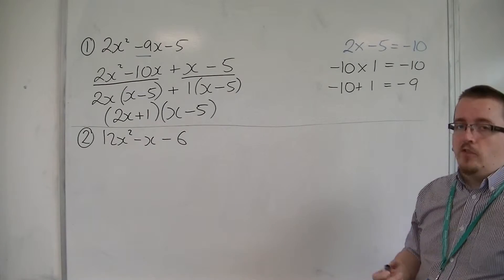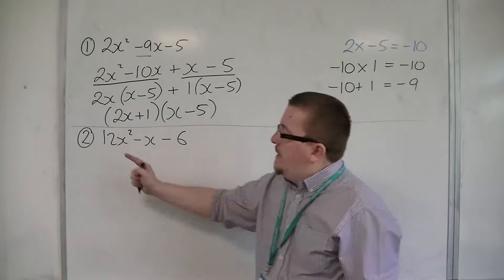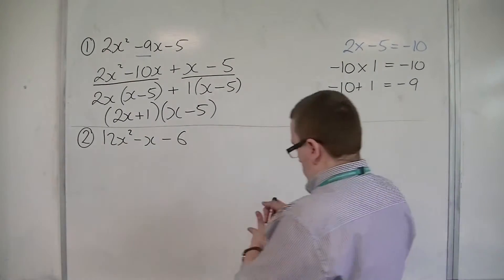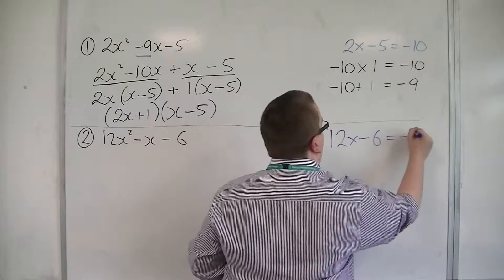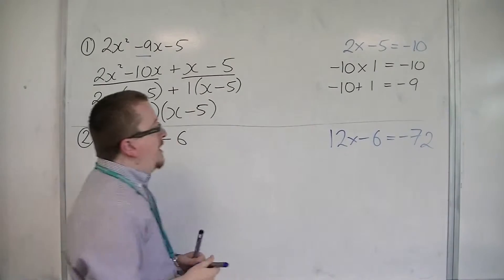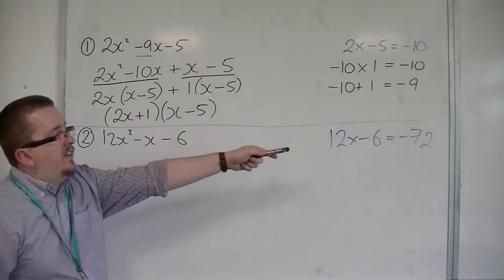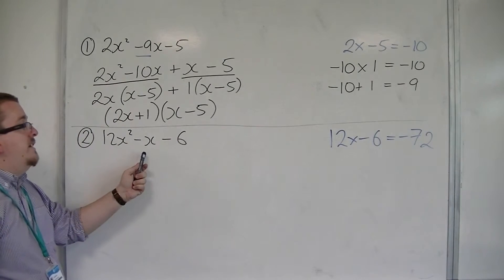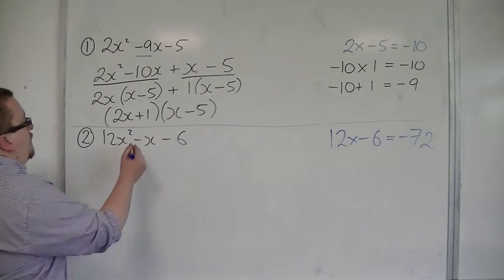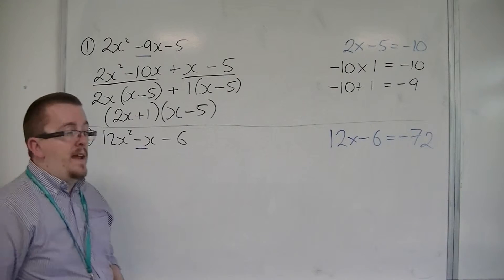So let's look at the next one. First step, multiply the 12 by the minus 6. So 12 times minus 6 is minus 72. So we're looking for two numbers that multiply together to make minus 72, but add together to make minus 1. That's what we're looking for here, the minus 1 that's in front of that x.